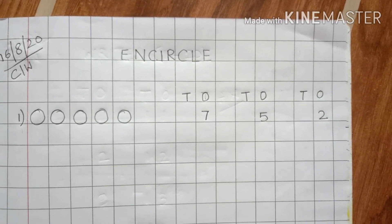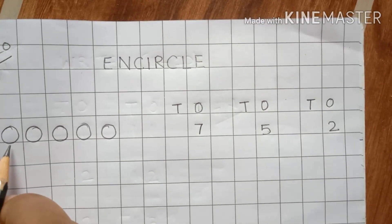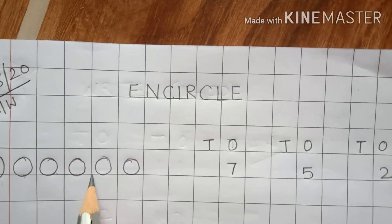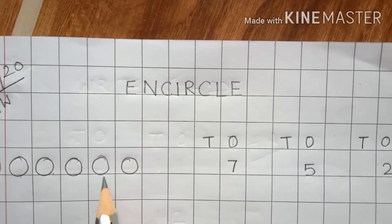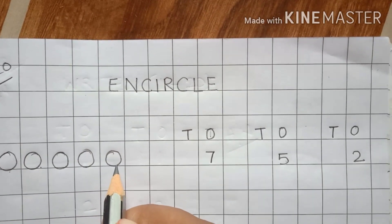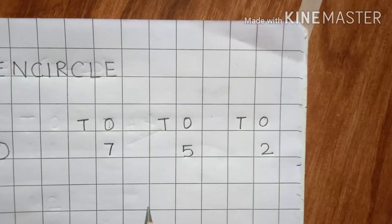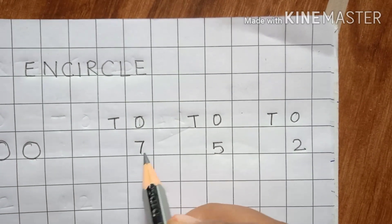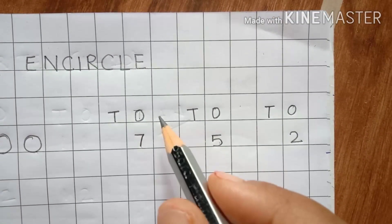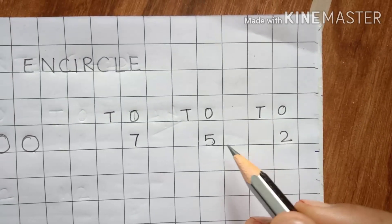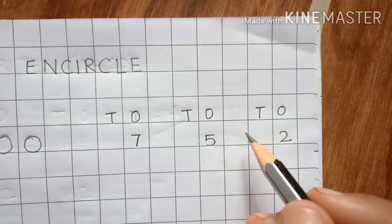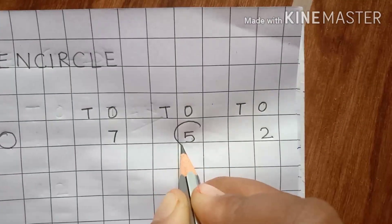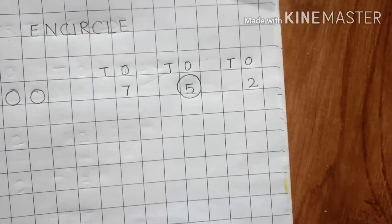Now how many circles we have drawn? Let's see again. 1, 2, 3, 4, 5. Now where is the number 5? Is this 5? No. This isn't 5. Is this 5? Yes. So we will encircle the number like this.